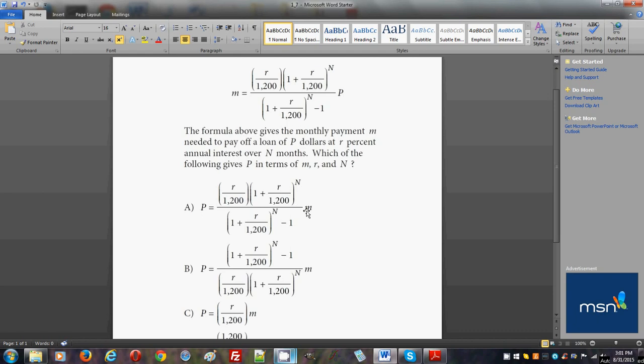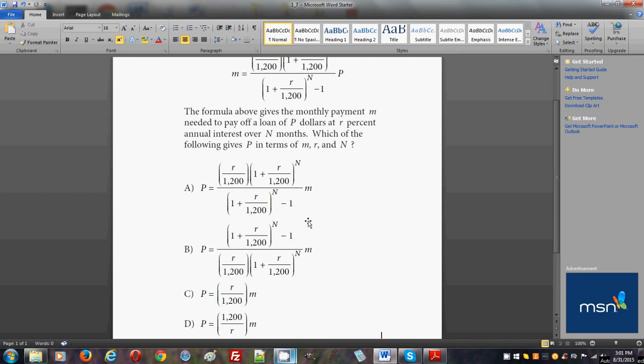Answer choice B sounds more promising because we have the m, which is part of the numerator, being multiplied by 1 plus r over 1200 to the power of n minus 1. The minus 1 is already listed here, and this whole thing multiplies m.